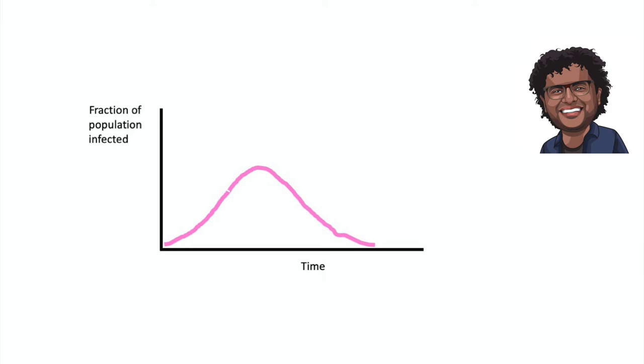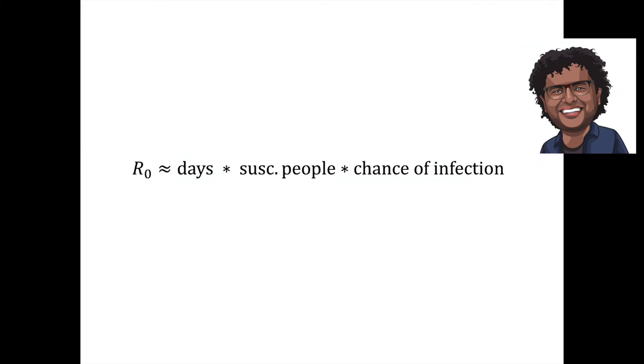So how do scientists actually calculate the R0? There are different ways to calculate R0. One way is quite intuitive. The number of people that someone infects will depend on the number of days they're infectious, the number of susceptible people that they meet, and the chance that a meeting leads to an infection. Therefore, washing hands and avoiding crowds reduces R0.